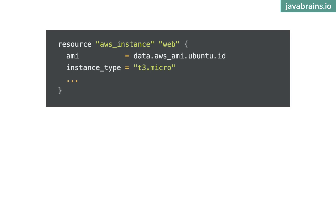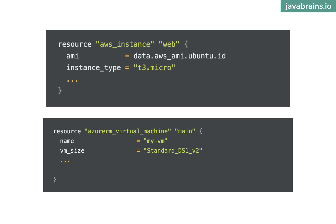Here is code for configuring an EC2 instance on AWS using Terraform, and here is code for setting up an Azure virtual machine using Terraform — truncated for simplicity. The properties are different because each cloud provider expects its own unique set of configuration values. Most of the time, you copy-paste the definition from the documentation and tweak the values to what you need. But the benefits are: the overall structure is the same, and you can have code for multiple cloud providers in the same file. Terraform is responsible for creating the right resource with the right provider.